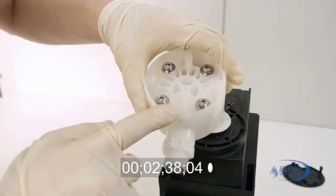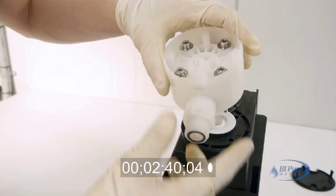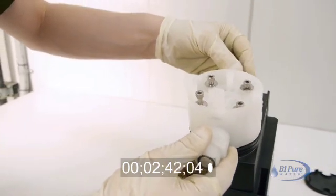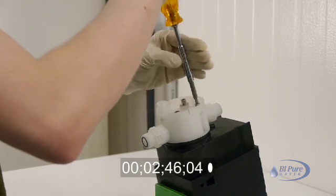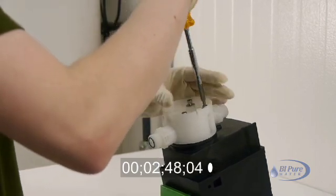With the deaeration valve pointing towards the top of the pump, reinstall the pump head. Evenly tighten the four hex bolts gradually in a star pattern as you would a car wheel.